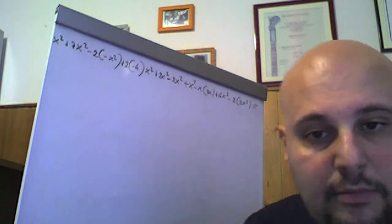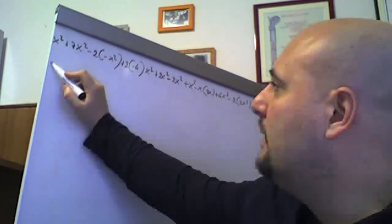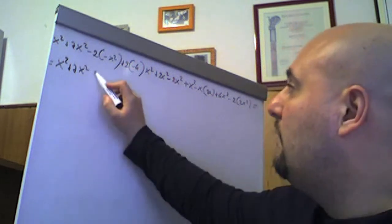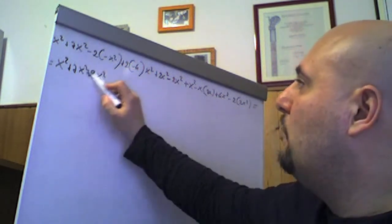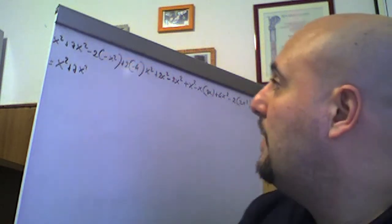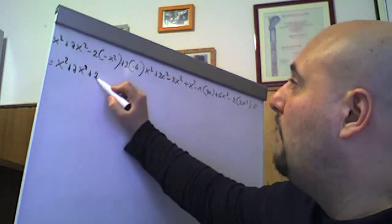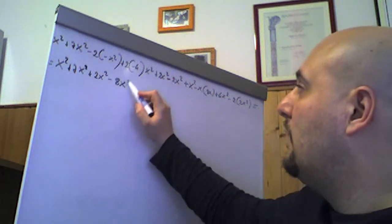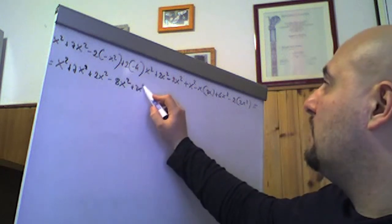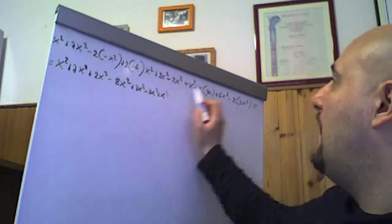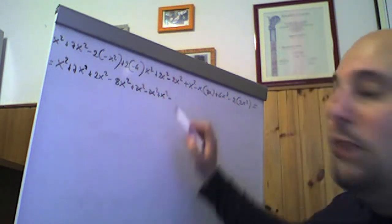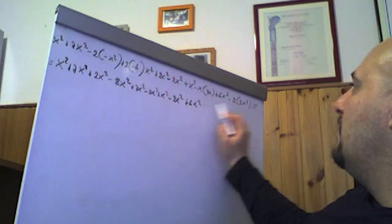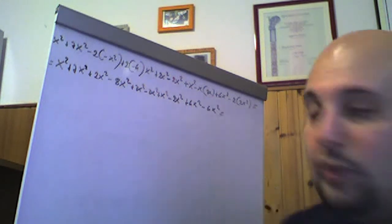Anche se è invitante fare già delle somme, prima le moltiplicazioni, poi le somme. Riscriviamo: x² + 7x² + 2x² − 8x² + 2x² − 2x² + x² − 2x² + 4x² − 4x². Sommiamo tutti i coefficienti con parte letterale x²: 1 + 7 + 2 − 8 + 2 − 2 + 1 − 2 + 4 − 4.